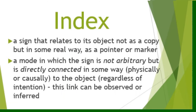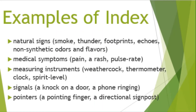And finally, we come to the index. The index is a sign that relates to its object, not as a copy but in some real way, as a pointer or a marker. In other words, index is the mode in which the sign is not arbitrary but is directly connected in some way, physically or causally, to the object, regardless of the intention, and this link can be observed or inferred. Common examples of indexes are natural signs such as smoke, thunder, or footprints; medical symptoms such as pain, a rash, pulse rate; measuring instruments such as a weather clock, thermometer, clock; signals such as a knock on a door or a phone ringing; and pointers such as a pointing finger or a directional signpost.